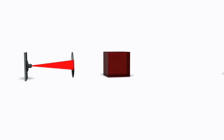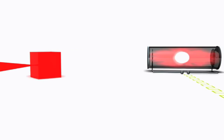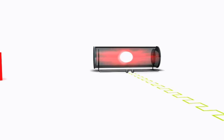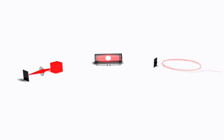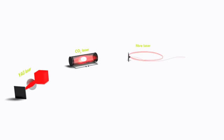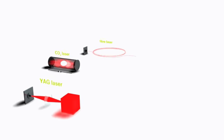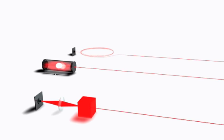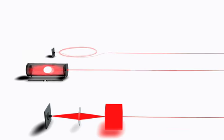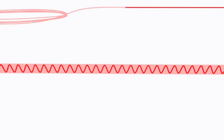Energy in the form of light or high frequency stimulates a laser active medium. This medium, which also provides the name for the type of laser, emits the energy in the form of laser radiation. Depending on which medium is used, the wavelength will be different and this has a decisive effect on the work that the laser can do.